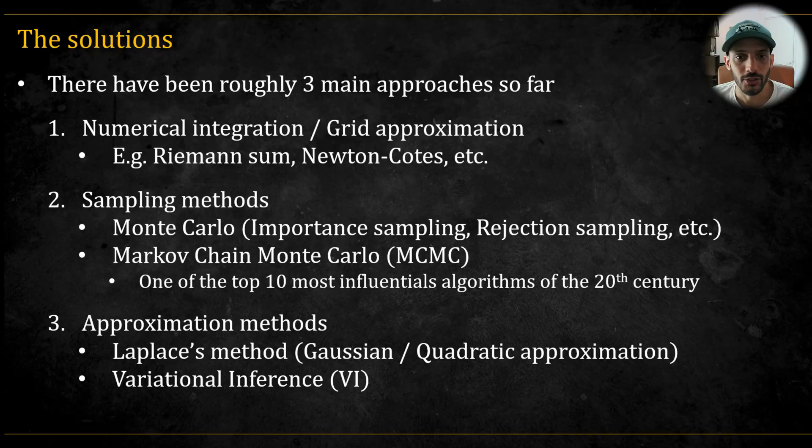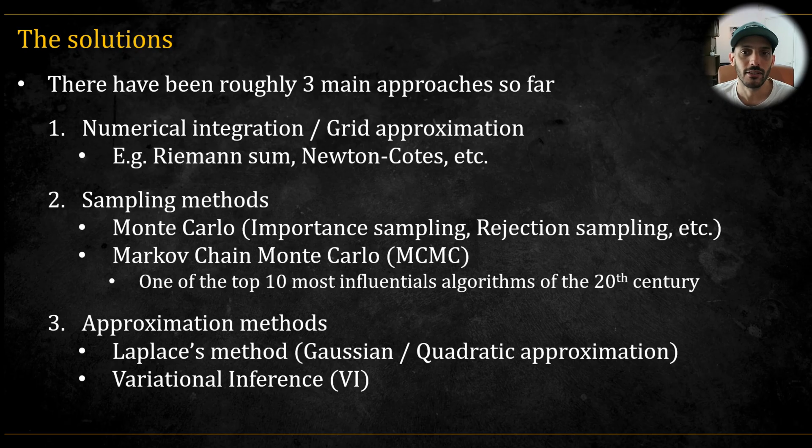So what are the solutions? The way I see it, there are three main approaches. The first is grid approximation, a simple example would be the Riemann sum. The second is sampling methods, ranging from simple Monte Carlo approaches to more sophisticated techniques like Markov chain Monte Carlo. MCMC is considered quite influential - one journal even named it among the top 10 most influential algorithms of the 20th century.